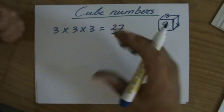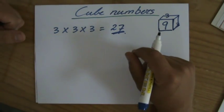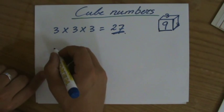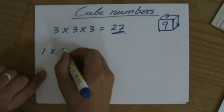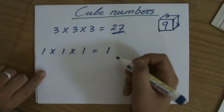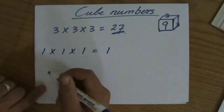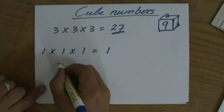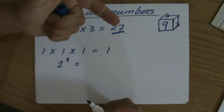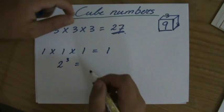Now you do not necessarily have to remember all those cube numbers, but it is good to know them. So the smallest cube number would be 1 times 1 times 1, which is 1. And then the second cube number, 2 times 2 times 2, so 2 to the power of 3. 2 times 2 is 4, times 2 is 8.